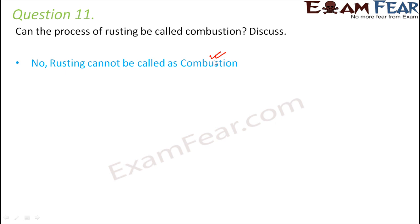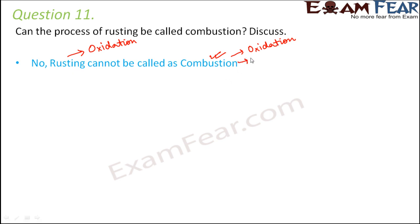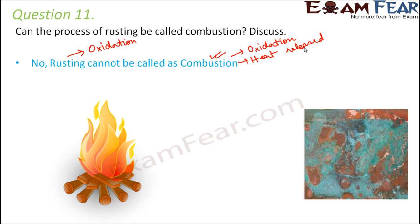The similarity between rusting and combustion is that both are oxidation — in both processes, the substance combines with oxygen. However, in case of rusting, no heat is released. In combustion, heat must be released. Only if oxidation results in production of heat and light is it called combustion.